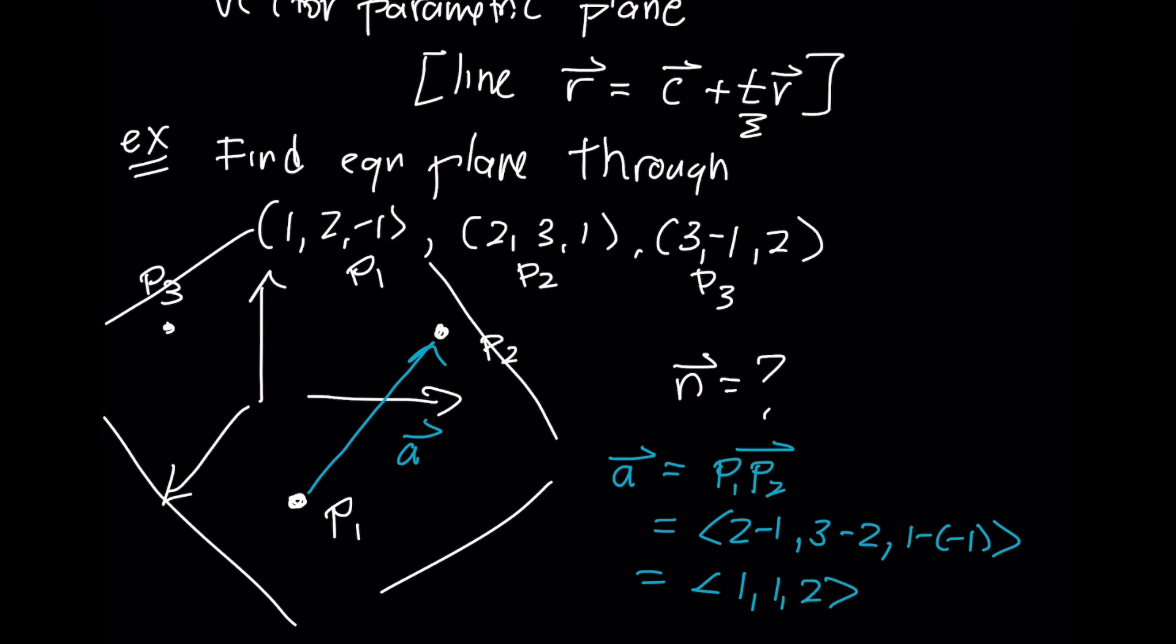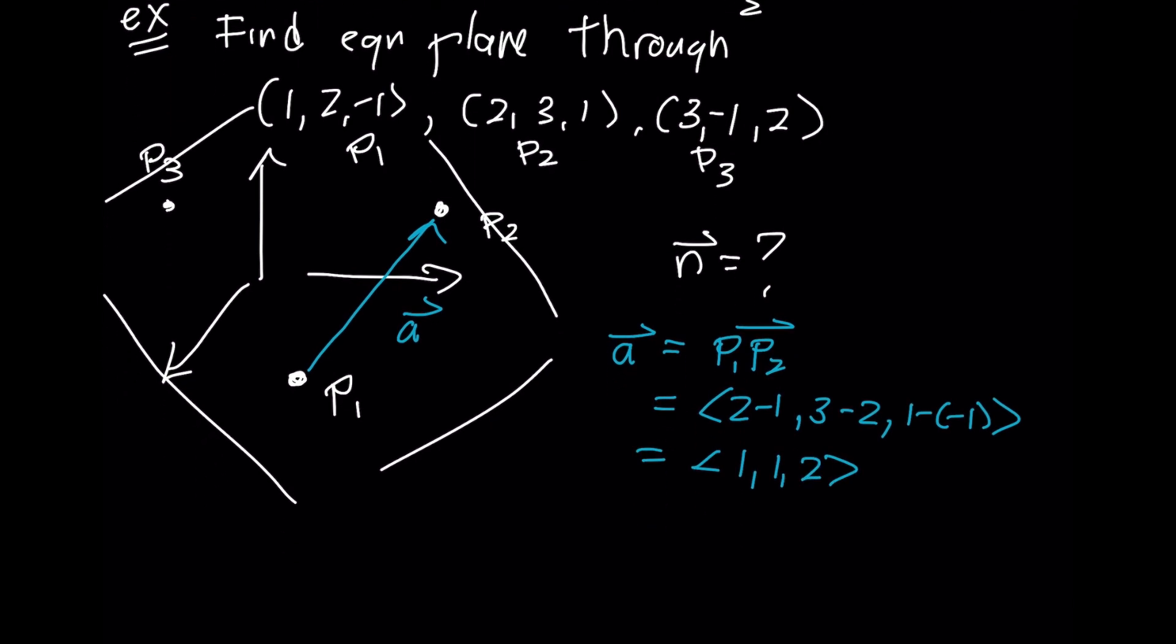And then there is this vector that I'm going to call B. B is the vector that goes from P₁ to P₃. And just like before, I'm going to subtract those components: 3 - 1, -1, and 2 - (-1). So I'll get <2, -3, 3>.